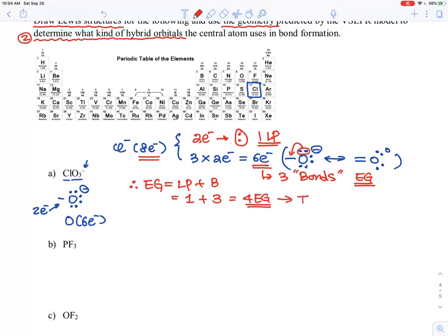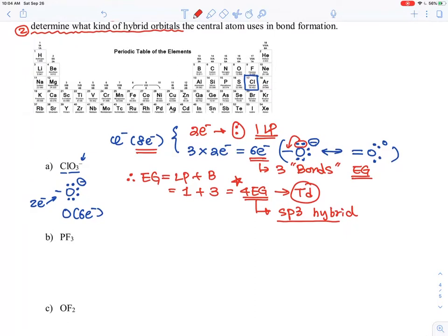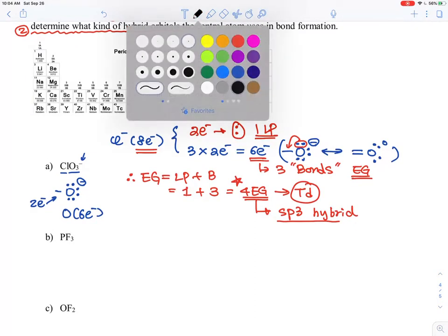4EG means tetrahedral, and tetrahedral with 4 means sp3 hybrid orbital. This is really central to figuring out the number of electron groups. Finally, let me show you the Lewis structures.